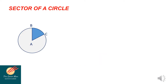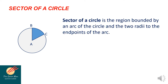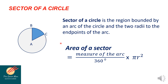Another term we will discuss today is sector of a circle. The sector of a circle is the region bounded by an arc of the circle and the two radii to the endpoints of the arc. In this example, we have circle A with segments AB and AC. The area of the sector is equal to the measure of the arc divided by 360 degrees, times pi-R-squared. Remember, pi-R-squared is the formula for the area of the circle, and the measure of the arc is expressed in degree measure.